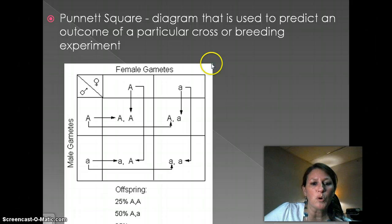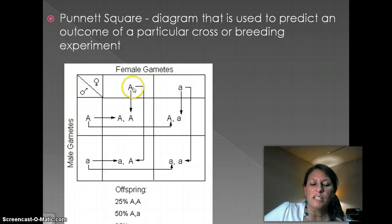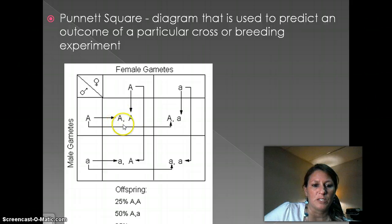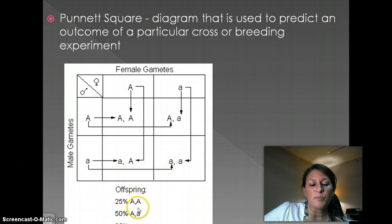A Punnett square — we'll cover this more in depth; this is just an introduction. It's used to predict an outcome — that's all it is. Here are my parents: the female parent and the male parent. I simply move one allele down and one allele across, and match them up — two big A's, one down, one across, giving big A little a. I want to point out: always put the capital letter first, because when we get to dihybrids it will make your life easier and reduce mistakes.